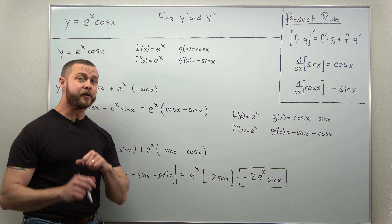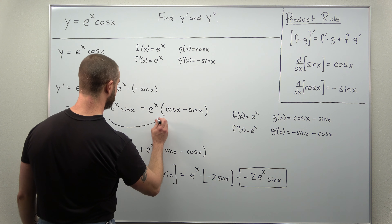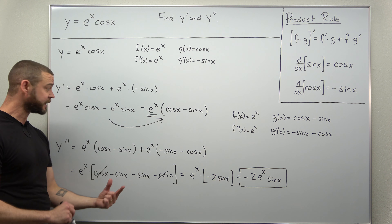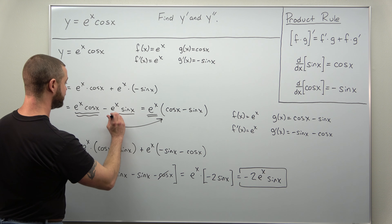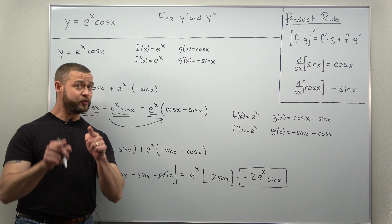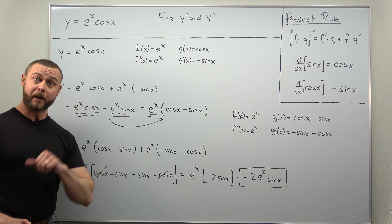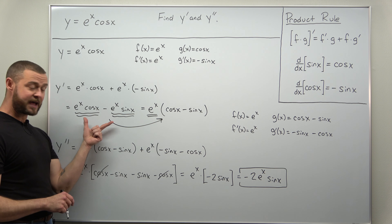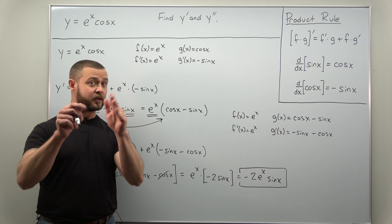What made all the difference in calculating the second derivative was this step right here — where we factored out e to the x. If you didn't do that, you can still get the correct answer, but you'd be applying the product rule twice: once to the first term and again to the second term. If you're up for the challenge to build your skills and do well in Calculus 1, try that here — put a set of parentheses around the minus sign and apply the product rule without factoring out e to the x, and see if you get the same answer.